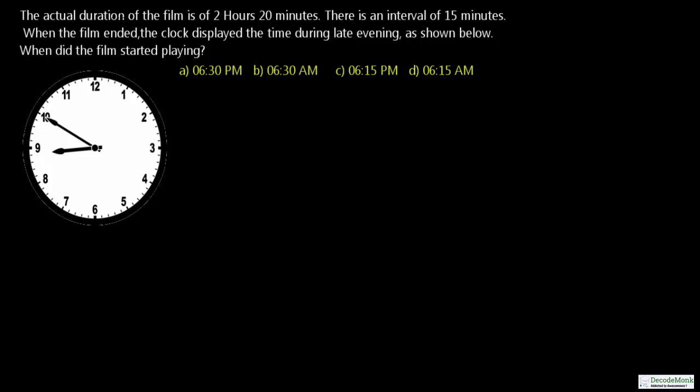The question states that the actual duration of the film is 2 hours 20 minutes. There is an interval of 15 minutes. When the film ended, the clock displayed the time during late evening as shown. We need to find out when the film started playing. We are given four similar-looking options.